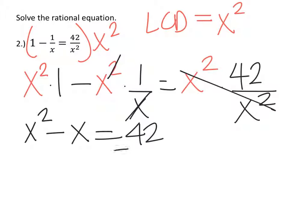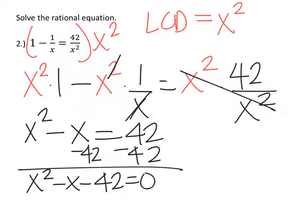Now I'm going to subtract 42 from both sides and I'll have x squared minus x minus 42 equals 0.